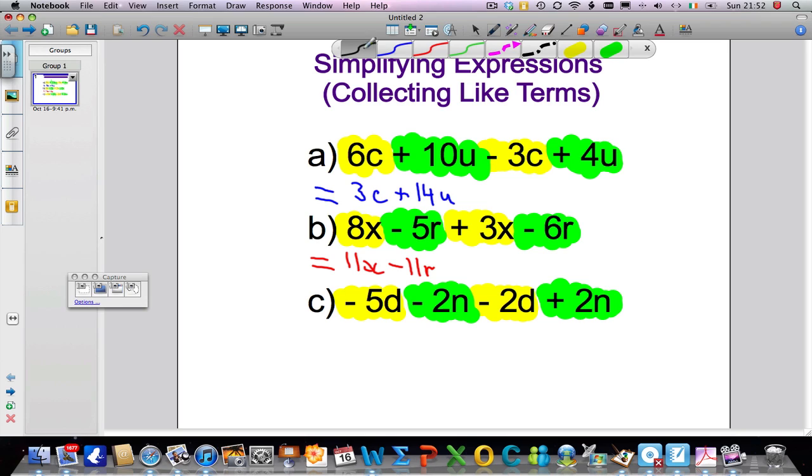This time, let's go with black. -5d - another 2d gives me a total of -7d. And then -2n + 2n, well hopefully you realize that -2 + 2 is 0. So that's it. That's everything simplified there.